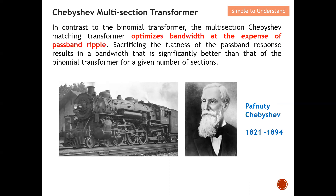This is the trade-off between the two methods: binomial and Chebyshev. As stated here, sacrificing the flatness of the passband response results in a bandwidth that is significantly better than the binomial transformer for a given number of sections. In short, when comparing the same number of sections, Chebyshev has a larger bandwidth, but you need to tolerate some ripple in the passband.